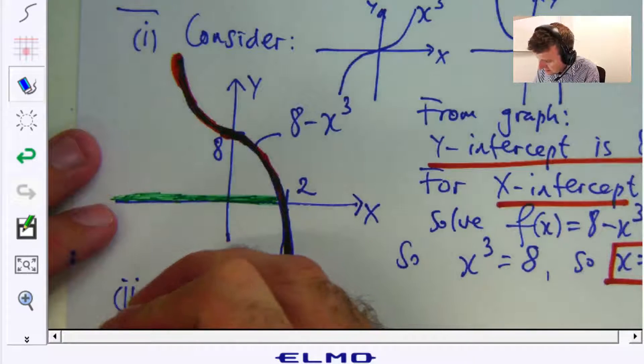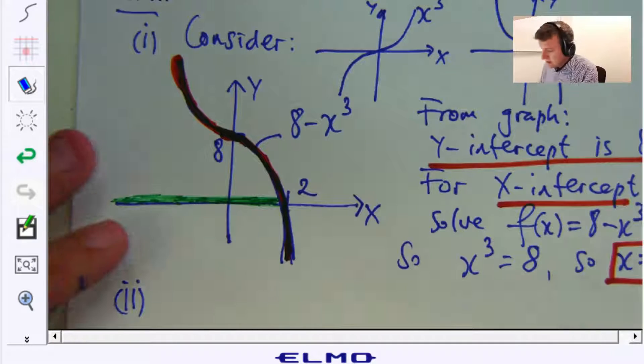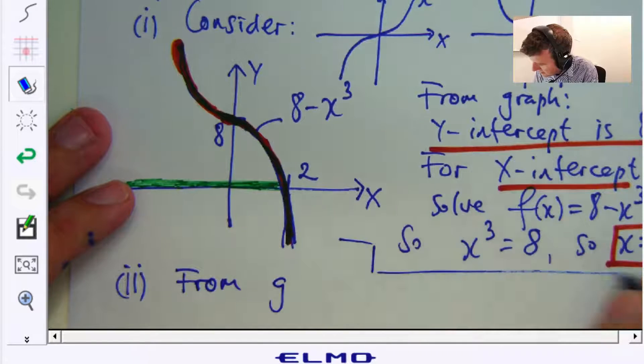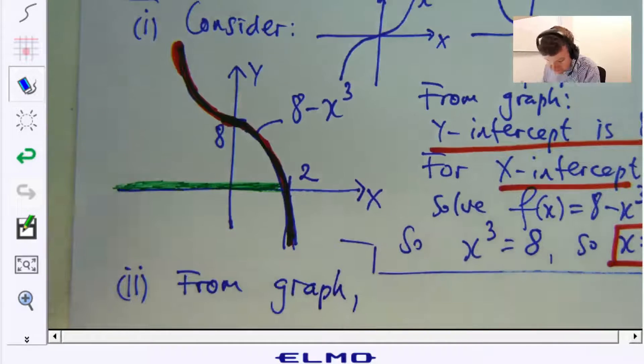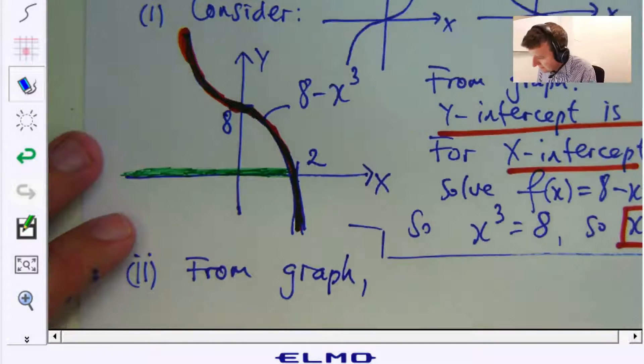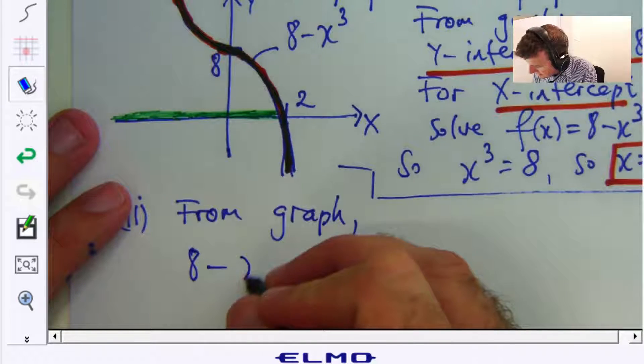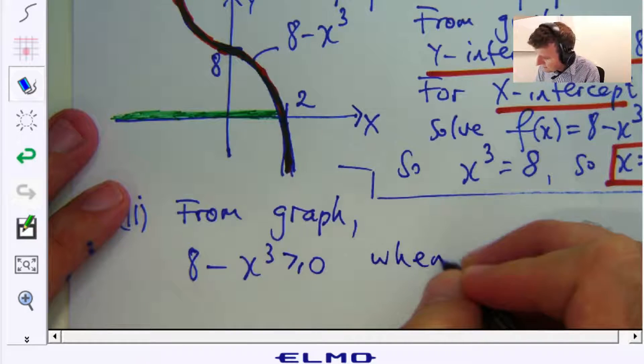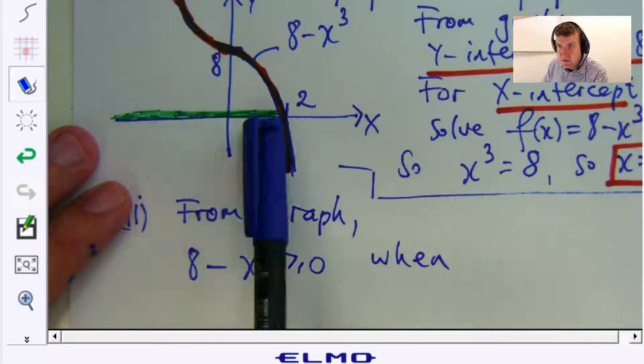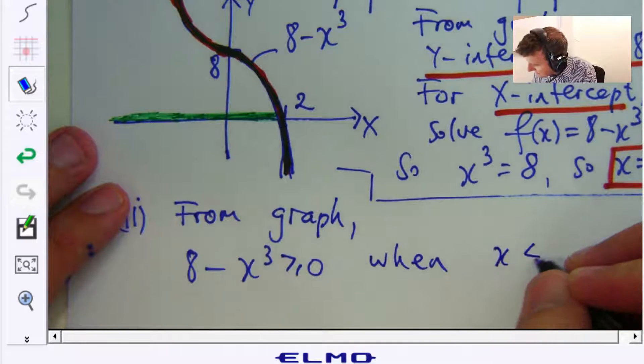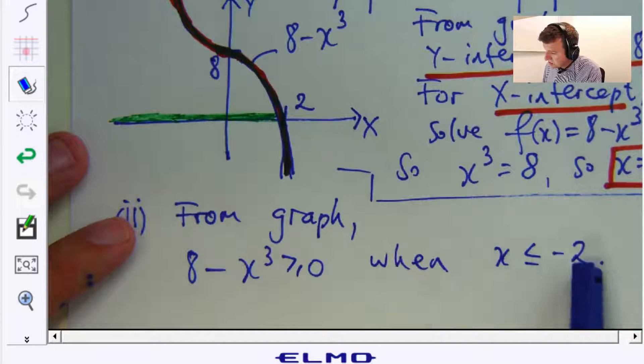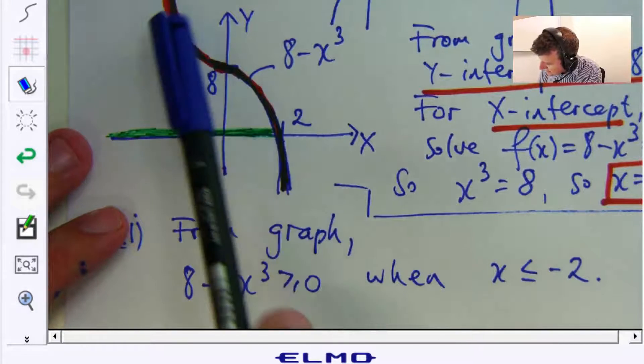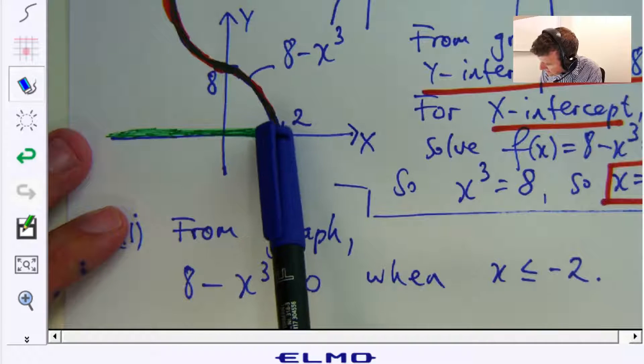So from our graph, 8 minus x cubed is greater than or equal to 0 when x is in this interval. So when x is less than or equal to 2 because we're looking at the graph that not only lies above the x-axis but also on the x-axis.